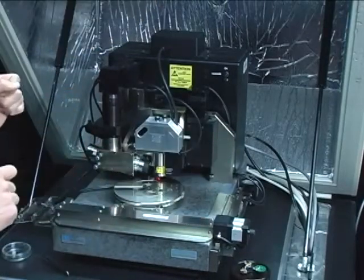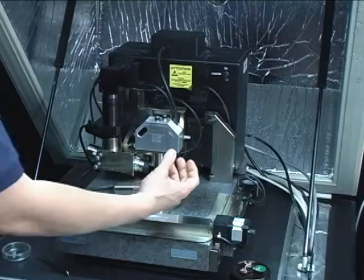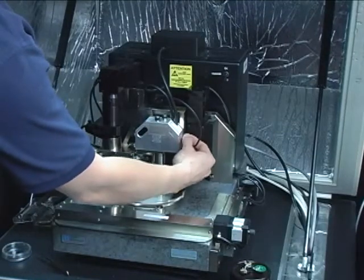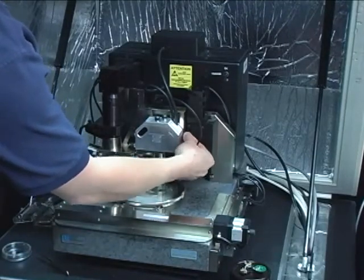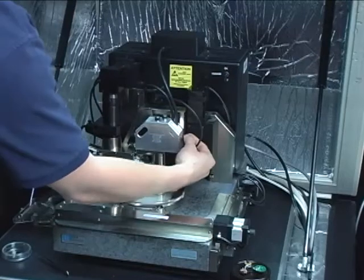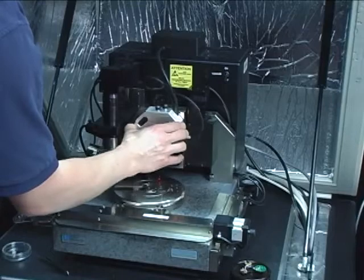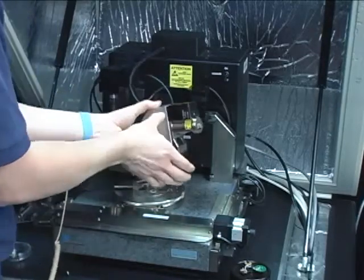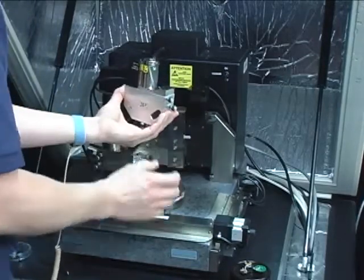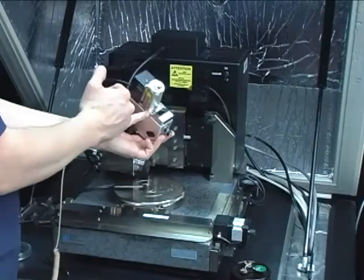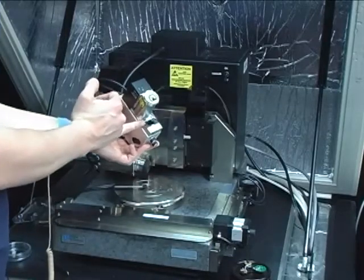Now that the conducting tip module is mounted on the scan head we can mount the cantilever mount on the scan head. So we tighten this thumb screw to release the scanner head. Gently flip it upside down being careful not to put a thumb print on the laser window.